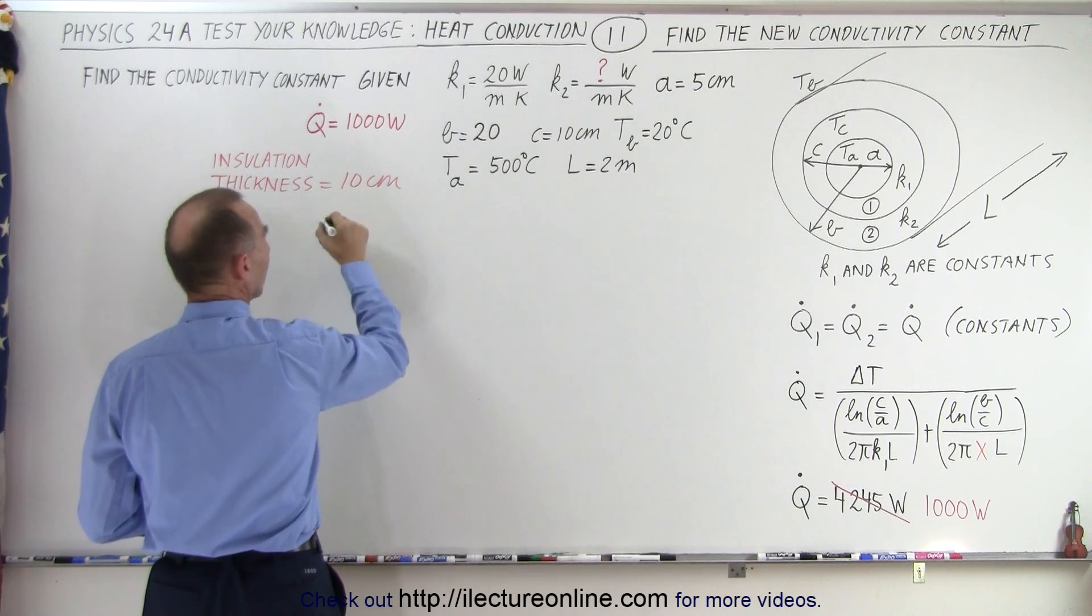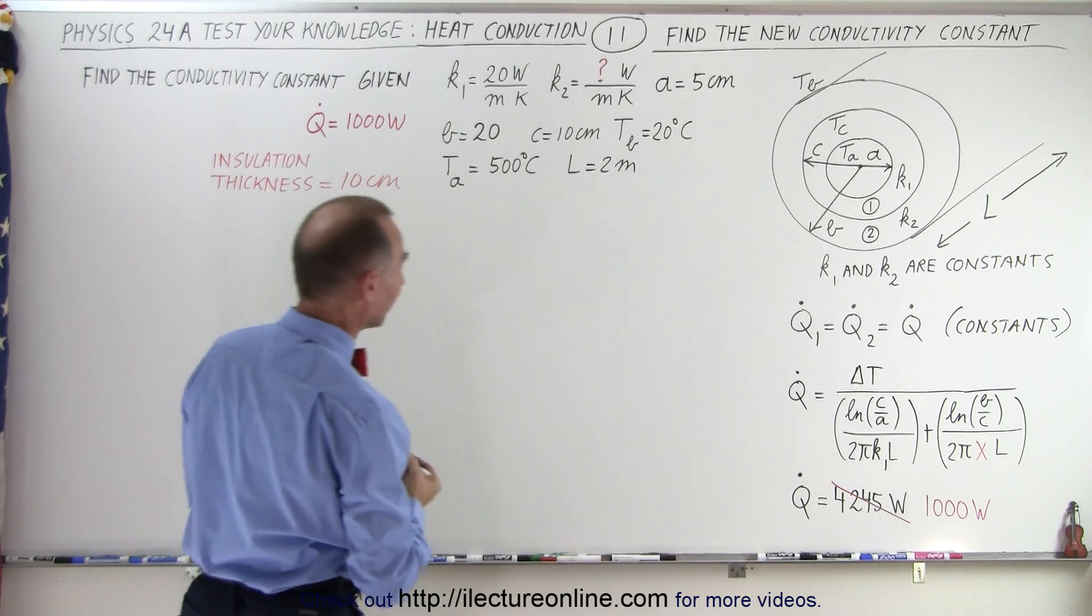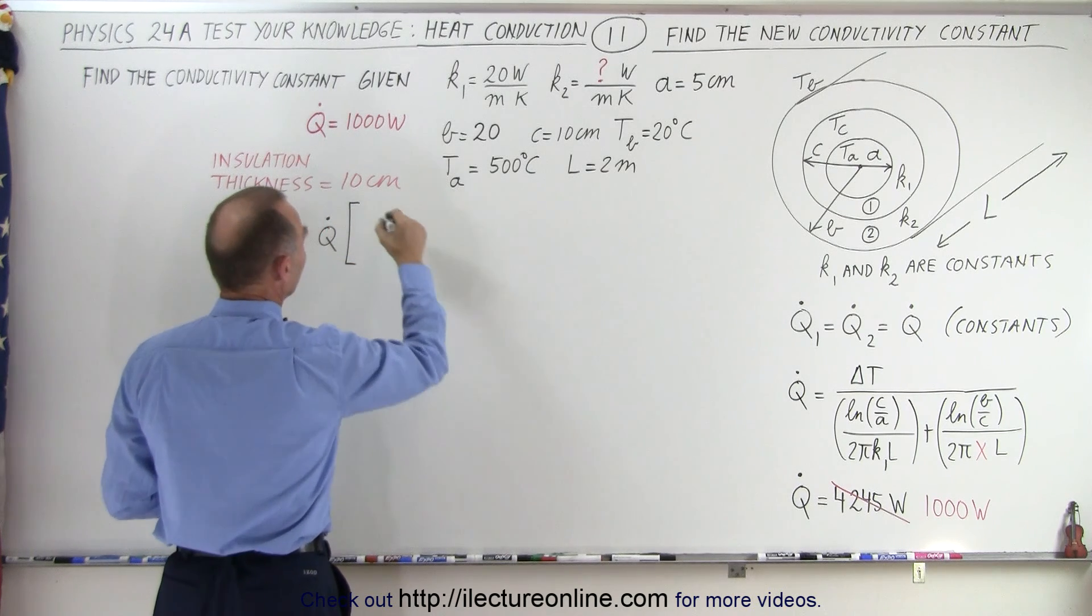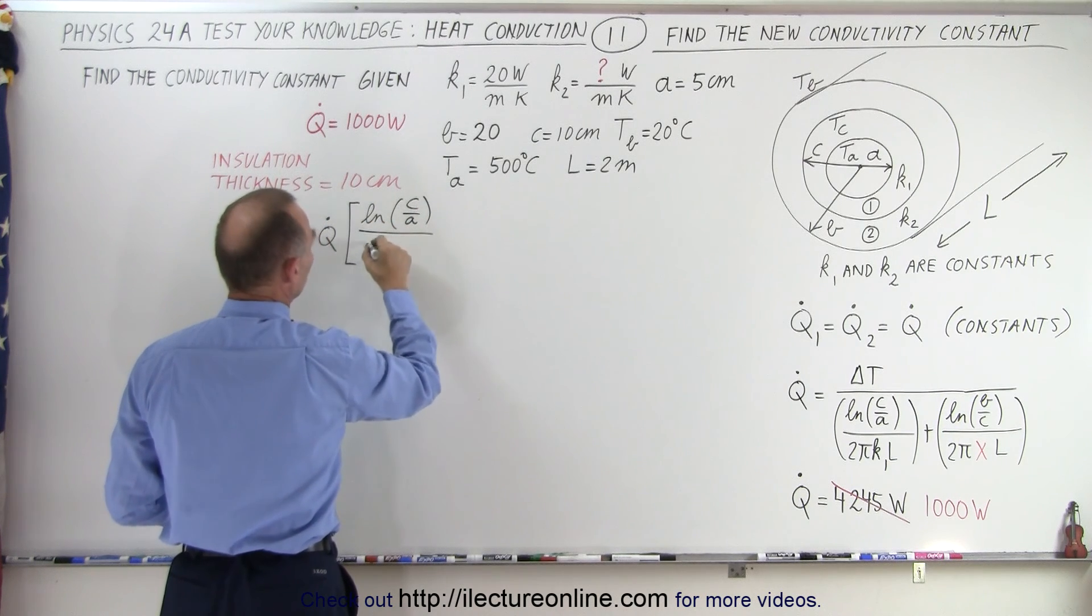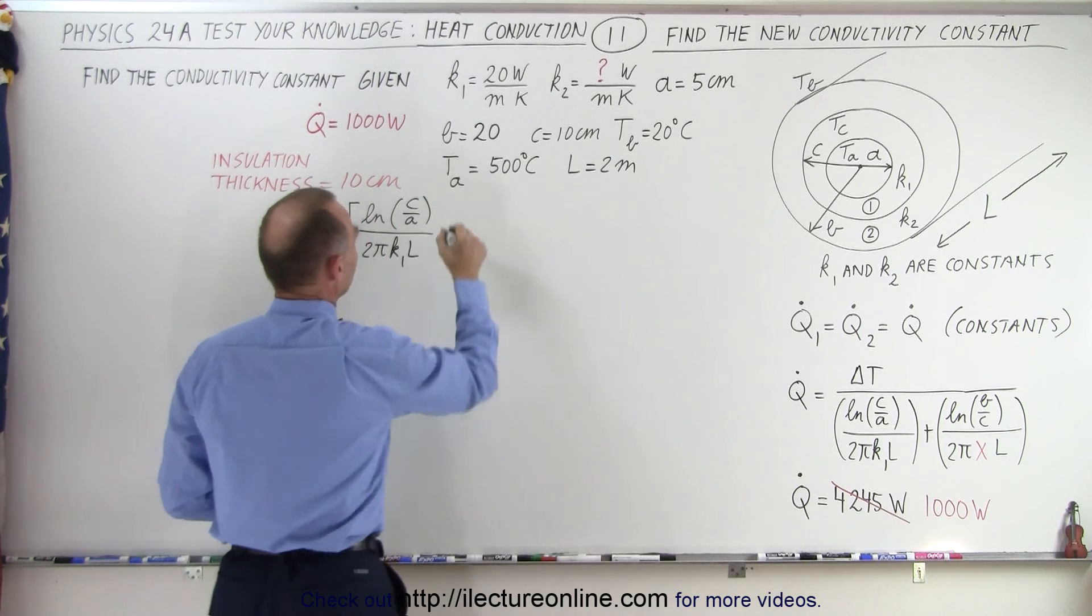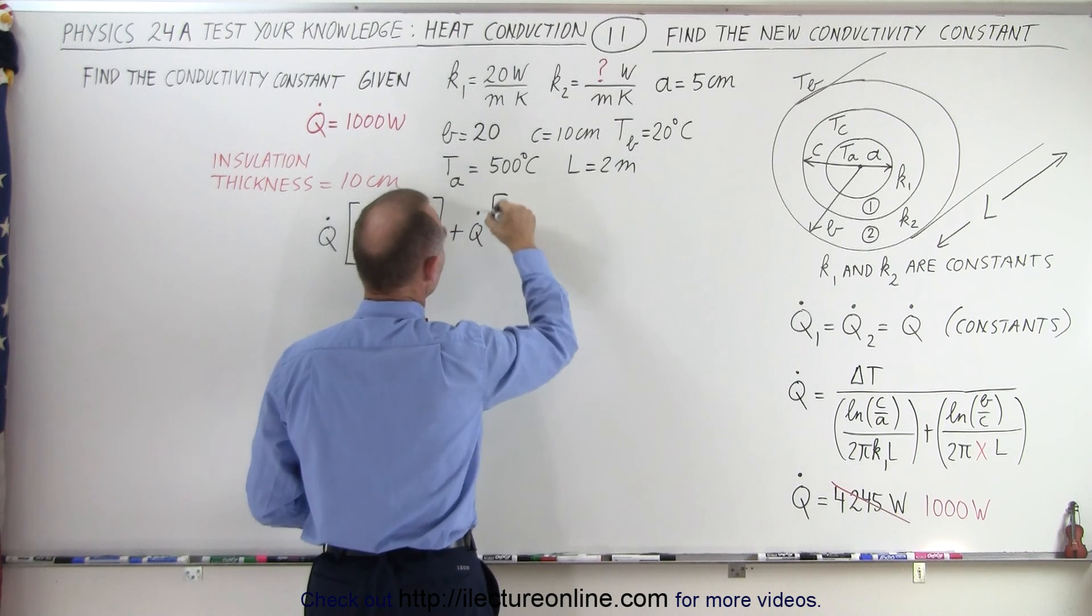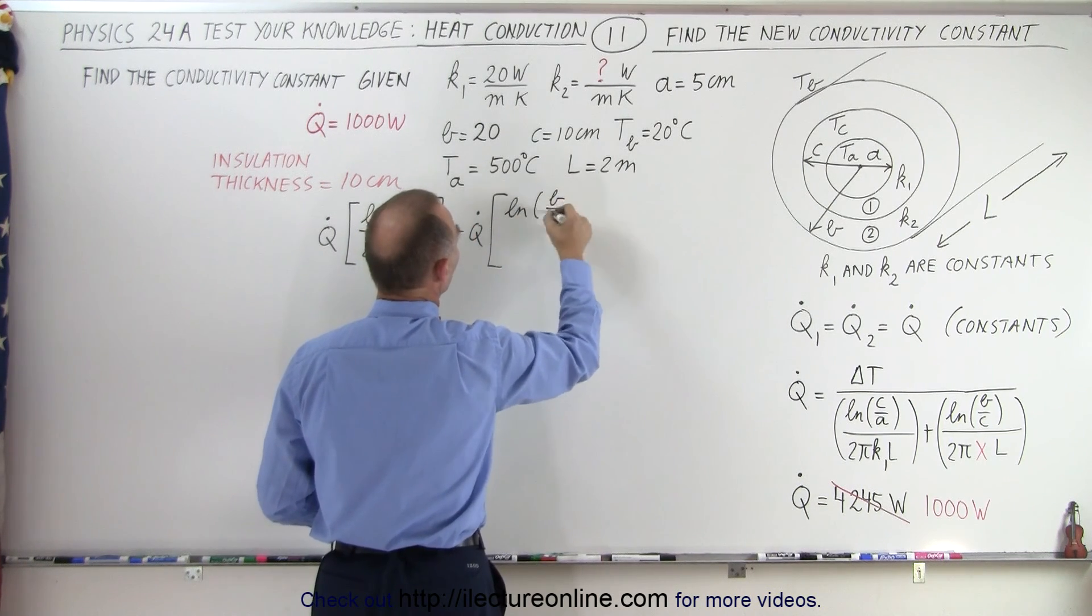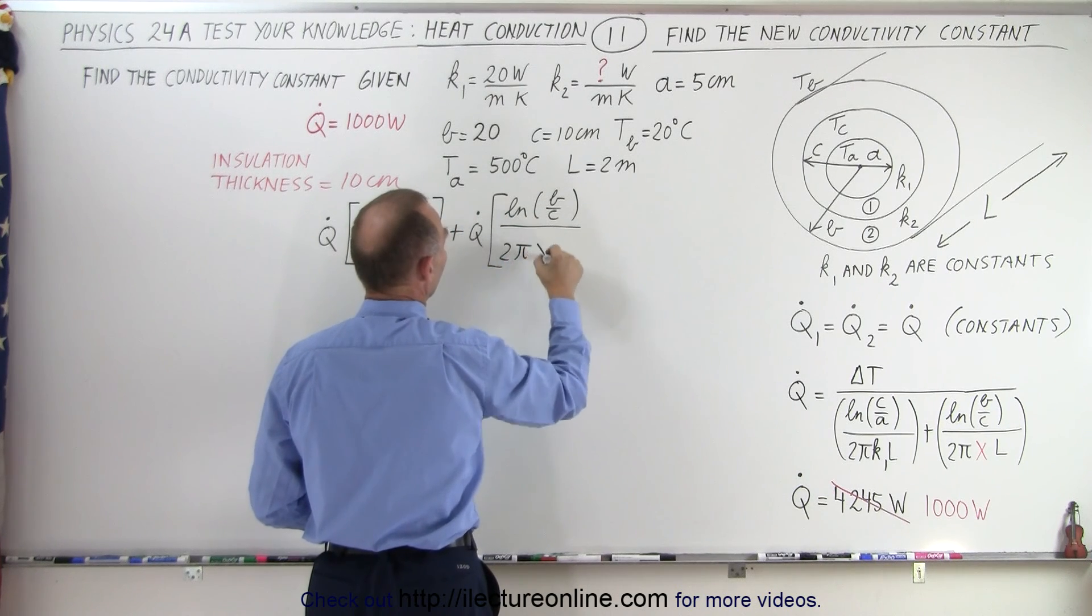So we have Q dot times the natural log of C over A divided by 2 pi K1 L plus Q dot times the second part of the denominator, in this case that's going to be the natural log of B over C divided by 2 pi X L.